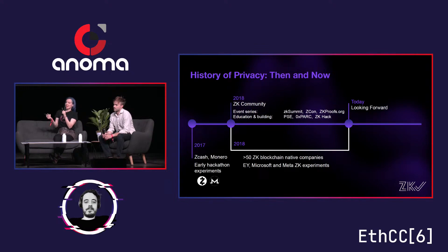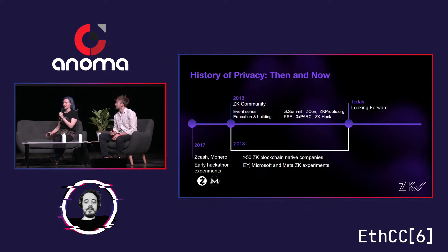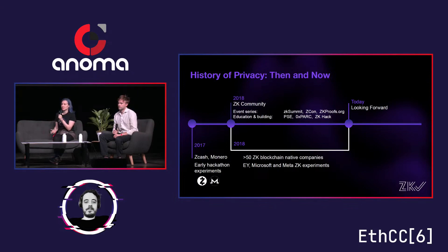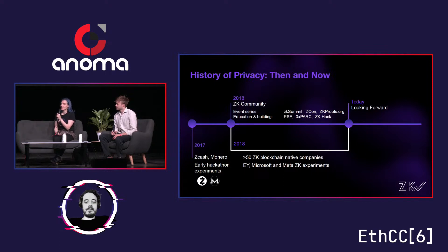We're starting the history of privacy around 2017. Privacy had been studied for a long time, and privacy in blockchain goes back further, but since we want to focus on Ethereum, around 2017 when Zcash had launched, the ideas they put forward could start to be incorporated into the Ethereum idea space. Around then we started to see some early hackathon projects. The ZK community really lives in a timeframe since 2018 — that's when we started the show Zero Knowledge, when I started the ZK Summit series, and also Zcon and the ZK Proofs event series started around then.